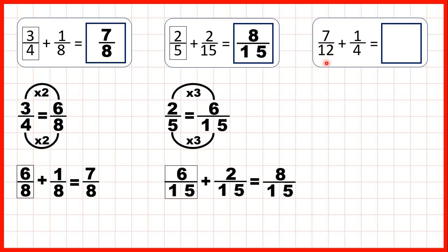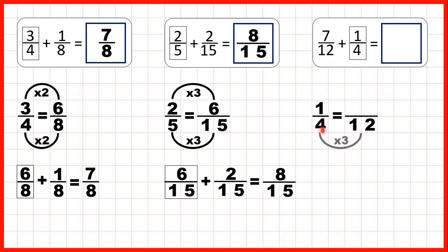Now we have seven twelfths plus one quarter. Twelve is in the four times table, so this time it's the second fraction — the fraction we're adding — that we need to find an equivalent fraction for. We need to find an equivalent fraction to one quarter which has a denominator of twelve. Four times three is twelve, and what we do to the denominator we need to do to the numerator as well, so one times three is three.